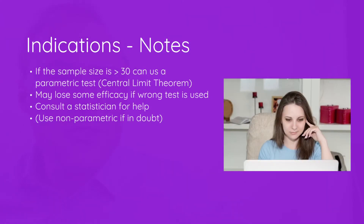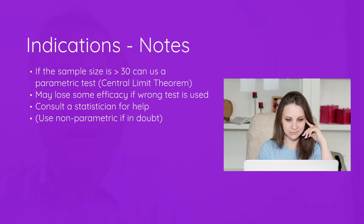So, when should we use non-parametric tests? If the sample size is greater than 30, we can use the central limit theorem to justify our normal tests — the t-test or ANOVA. If, however, the sample size is small, we may want to consider non-parametric studies. We can lose some efficacy if the wrong test is used, so you may want to consult a statistician to find out whether non-parametric testing is appropriate.